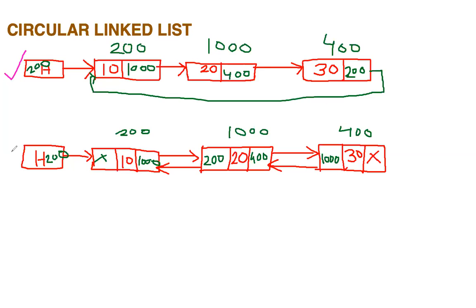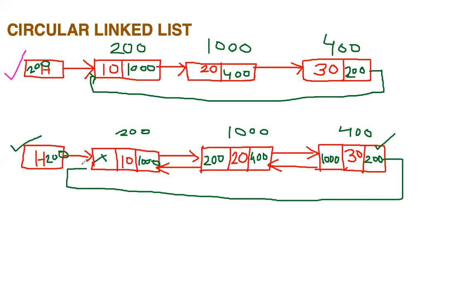Similarly, in a doubly linked list, the last node contains a null pointer in the next part. In a circular doubly linked list, instead of null, the next pointer of the last node stores the address of the first node — which is 200. This is why it is known as a circular list: we can start from the first node and come back to the first node after the last node has been visited.